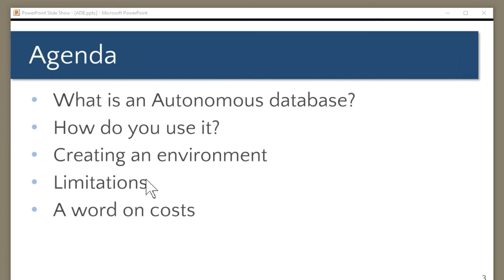A word on the limitations — DBAs and developers may find there are some things that don't work in an autonomous environment. Whether those things matter is something for you to assess. We'll have a quick look at some of the limitations that might be significant. Costs are a real problem; it's impossible for us today to discuss costs in any sort of detail, so please bear with us on that. If you'd like more information you can contact us, but almost certainly the answer will be we'll get back to you later.